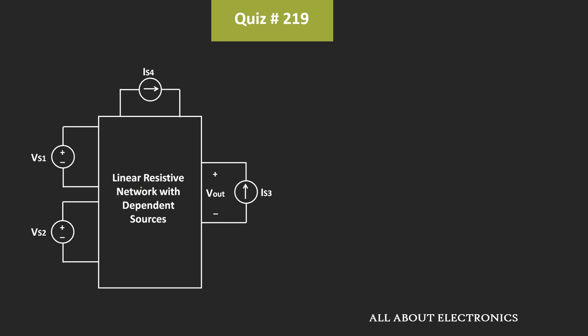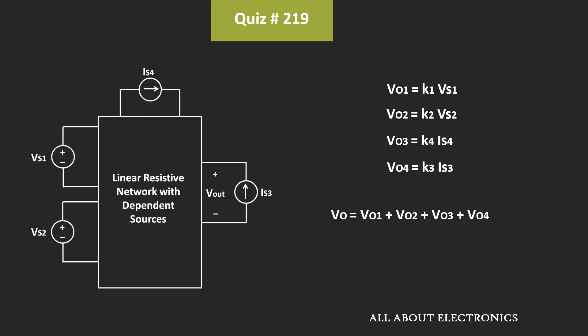Now, as the given network is a linear resistive network, it will follow the principle of superposition. When VS1 is acting alone, the output voltage is equal to Vo1, and Vo1 is proportional to VS1, so Vo1 = K1·VS1. Similarly, the output voltage due to VS2 is K2·VS2, due to IS4 is K4·IS4, and due to IS3 is K3·IS3. The total output voltage is the summation of all these: Vout = K1·VS1 + K2·VS2 + K4·IS4 + K3·IS3.